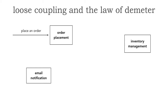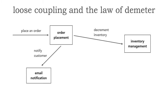The order placement is responsible for placing the order, but not decrementing the inventory. There's a delegation — a communication — that happens between the order placement and the inventory management to say, hey inventory management, can you please decrement the inventory? And the order placement is also not responsible for emailing or notifying the customer that the order's been placed, so it delegates that communication to the email notification service or component to notify the customer. This is a really good example of delineated roles and responsibility and cohesion.